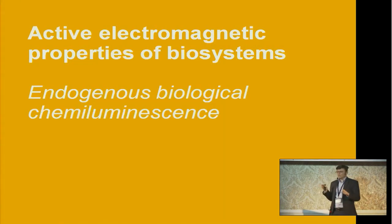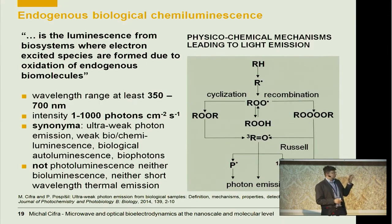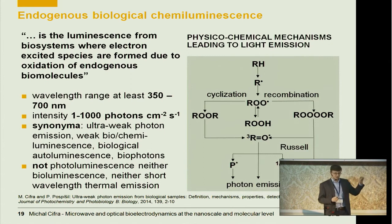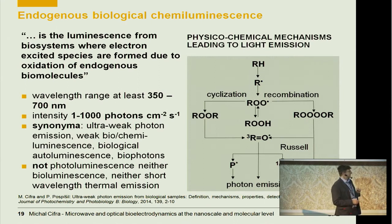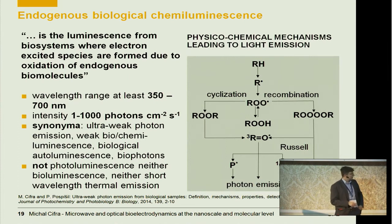The second story is related to our work on active electromagnetic properties of biological systems — how biological systems can generate electromagnetic field. This topic is about how biological systems generate light. I'm speaking here about endogenous biological chemiluminescence: luminescence from biological systems where electronically excited species — which can emit photons when they relax to the ground state — are formed due to the oxidation of endogenous biomolecules. This phenomenon takes place across basically the entire visible range and is of very low intensity.